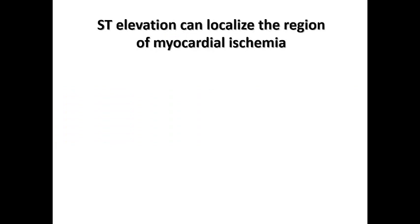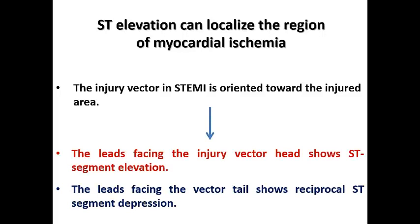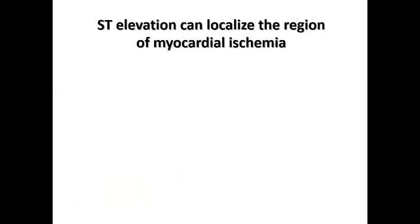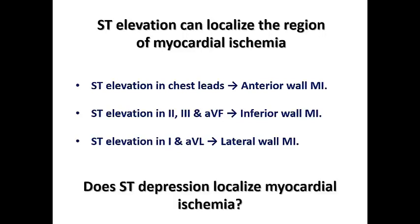Regarding ST segment deviation: ST elevation can localize the region of myocardial ischemia because the injury vector in patients with STEMI is oriented towards the injured area. This results in leads facing the injury vector showing ST segment elevation, and leads facing the opposite side showing reciprocal ST segment depression — as explained before in the lecture on ECG and STEMI. ST elevation in chest leads suggests anterior wall MI, in inferior leads suggests inferior wall MI, and in lateral leads suggests lateral wall MI.